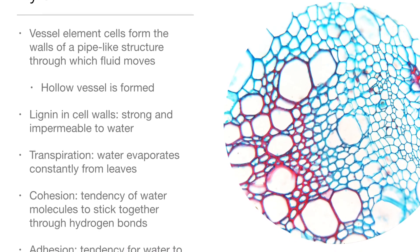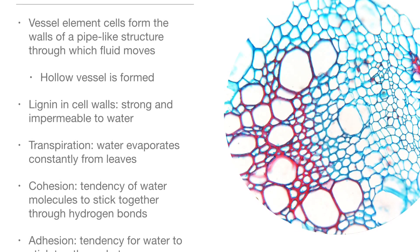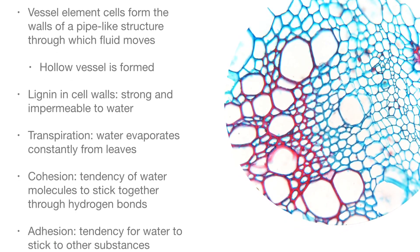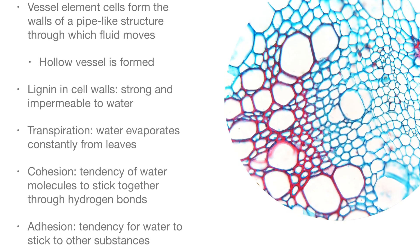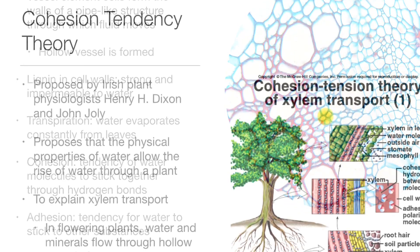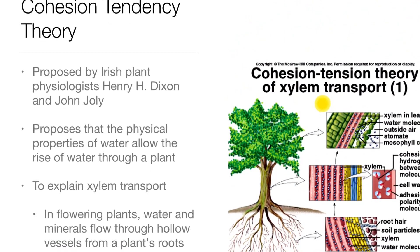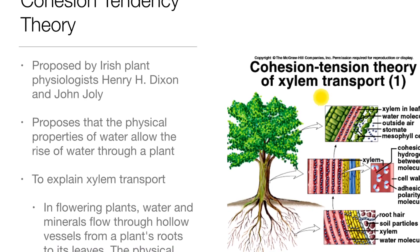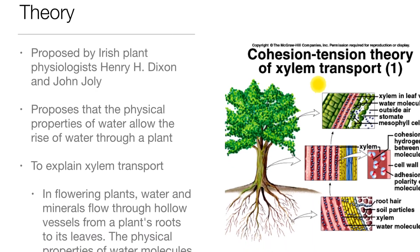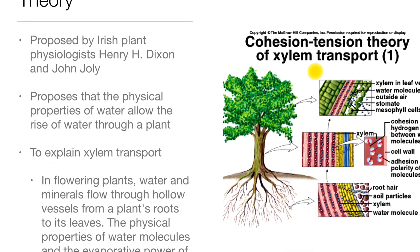Transpiration: water evaporates constantly from leaves. Cohesion is the tendency of water molecules to stick together with hydrogen bonds. Adhesion is the tendency for water to stick to other substances. The Cohesion-Tension Theory, proposed by Irish plant physiologists Henry H. Dixon and John Joly, proposes that physical properties of water allow the rise of water through a plant, explaining xylem transport.